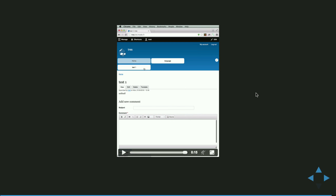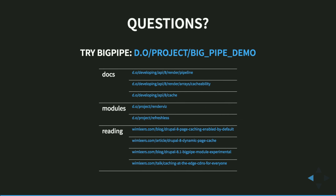I welcome all feedback. So, try BigPipe. Try the demo. Install it. Give it a try. Give feedback so that we can make it a stable module in Drupal 8.2, hopefully — otherwise 8.3 maybe. Then everybody can benefit. Thank you.